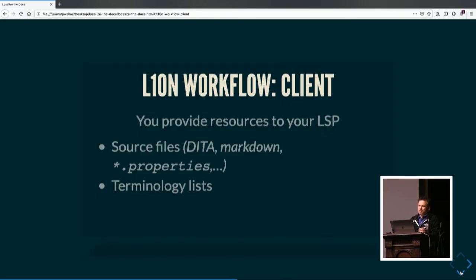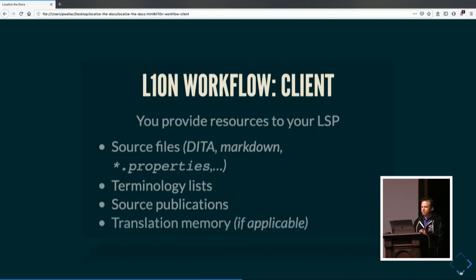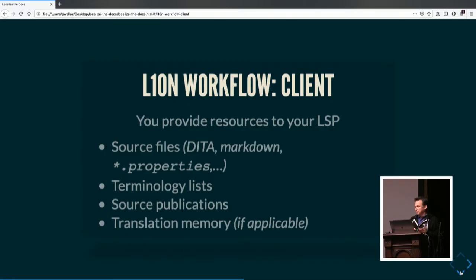Terminology lists include product names, domain terms, terms not to translate, anything you want treated specially. Source publications are very helpful — a complete publication in English, because the translator can refer to it when they have a question about a sentence and see it in context, which helps them make the right word choice. Once you get going, you will have translation memory, and you'd want that to accompany your translations. It's probably best if you keep a copy of that for yourself.